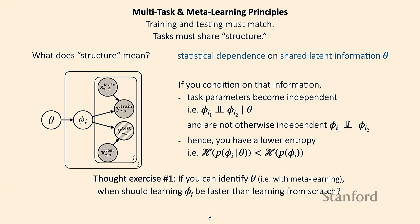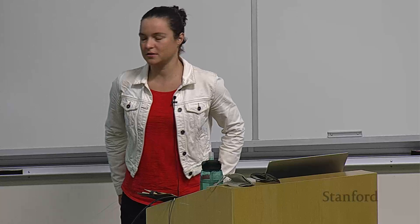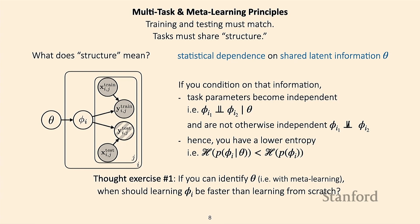Let's walk through some thought exercises. The first: if you can identify the meta-parameters theta with a meta-learning algorithm, when should learning phi_i be faster than learning from scratch? When your task is from the same distribution as the one you used to learn theta. If the task you're trying to learn is from the same distribution as tasks seen during meta-training, the shared structure should be useful for inferring what phi_i should correspond to.